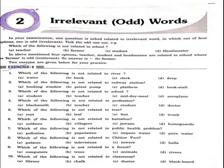Hello everyone. Today we will read lesson number two of your vocabulary part of the English drama book. The name of the lesson is irrelevant odd words. In your examination, one question is asked related to the irrelevant word, in which out of four options, one is odd and irrelevant — take the odd one out.